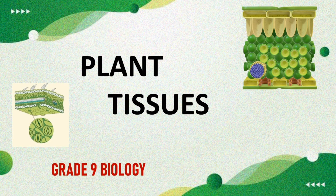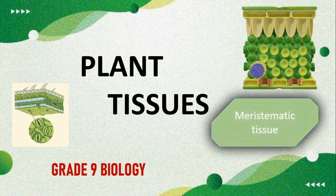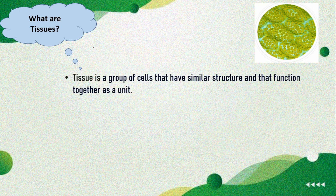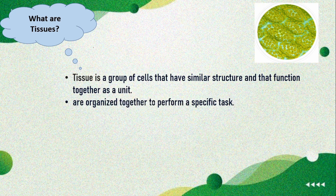Hello students, today I am going to teach you one of the most important topics in the tissues chapter, that is plant tissues. Before going into detail of plant tissues, let us understand what a tissue is. A tissue is nothing but a group of cells that have similar structure and that function together as a unit, organized to perform a specific task.